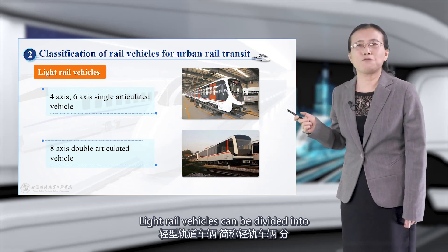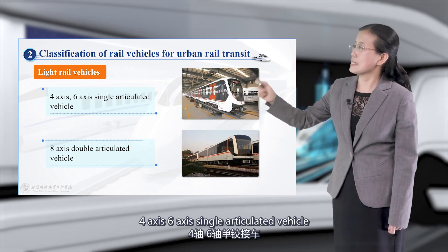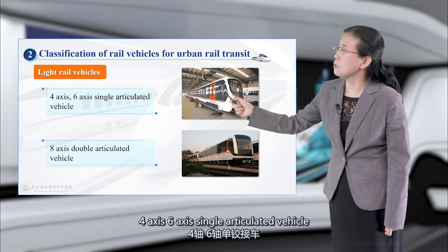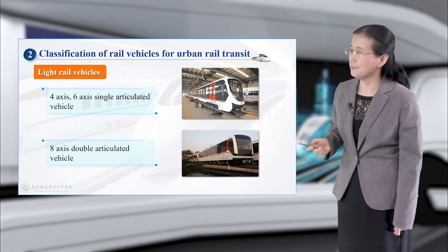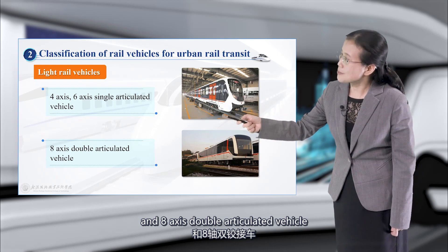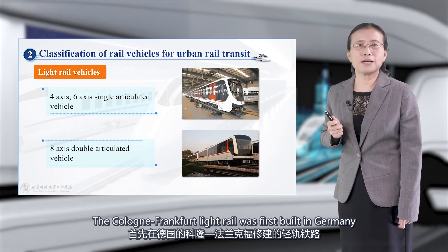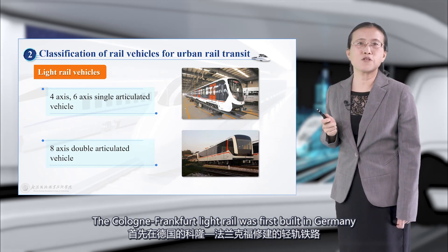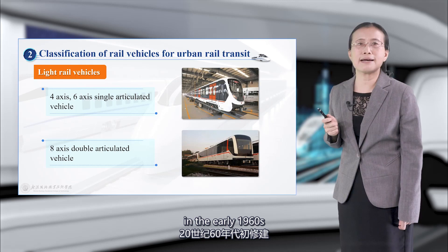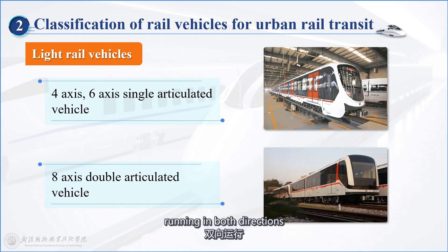Light rail vehicles can be divided into four-axis, six-axis single-articulate vehicles, and eight-axis double-articulate vehicles. The Cologne-Frankfurt light rail was first built in Germany in the early 1960s, using U2-type, six-axis, single-hinged locomotives running in both directions.